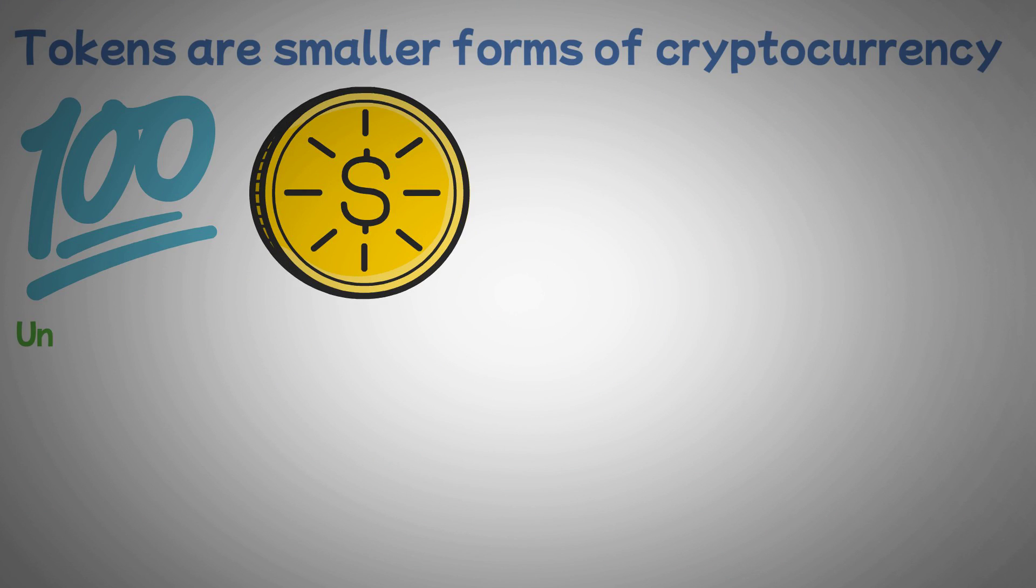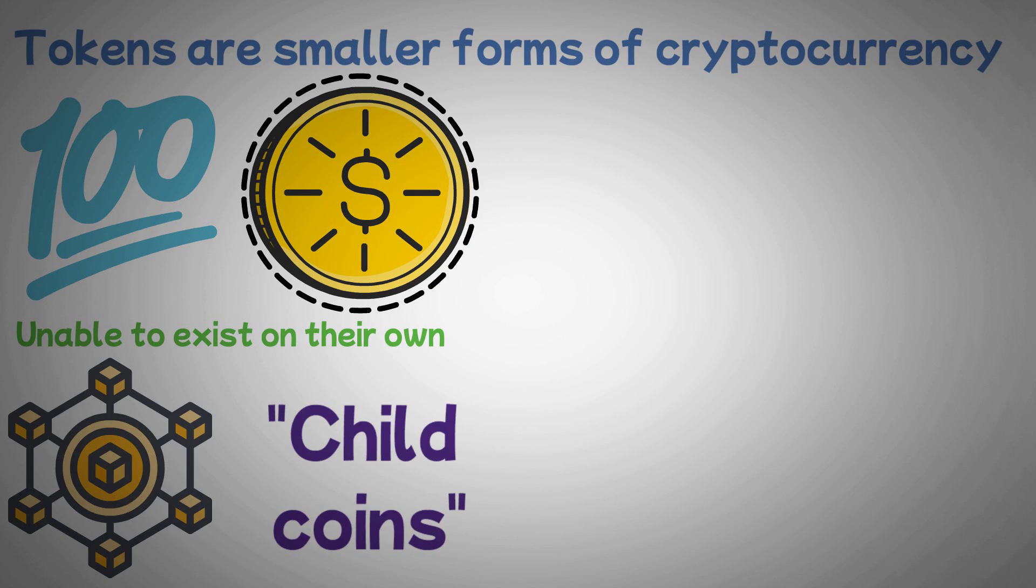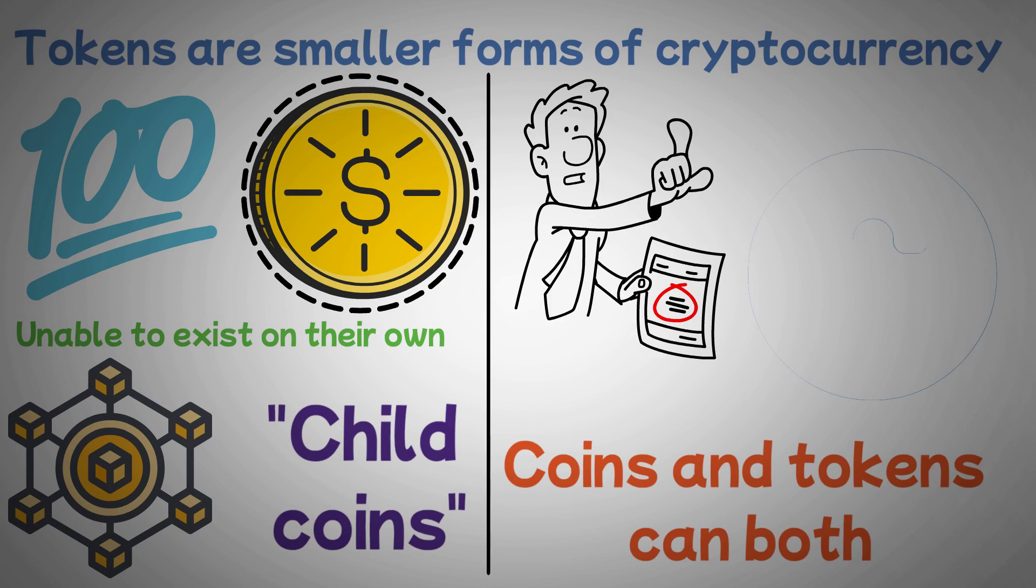Additionally, tokens are unable to exist on their own. They are instead hosted on a cryptocurrency's blockchain. As a result, tokens are what are known as child coins that are based on parent coins or the large ones in this environment. It's also important to note that coins and tokens can both be referred to as cryptocurrencies. It depends on the circumstances.